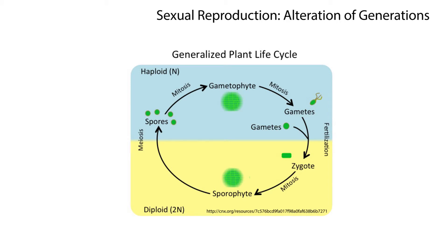Both gymnosperms and angiosperms go through the process of alternation of generations. In this process, a sporophyte produces spores through meiosis. These spores produce haploid male and female gametophytes through mitosis. The gametophytes then go on to produce eggs and sperm, which come together to form a diploid zygote that grows into a full-grown plant or sporophyte.